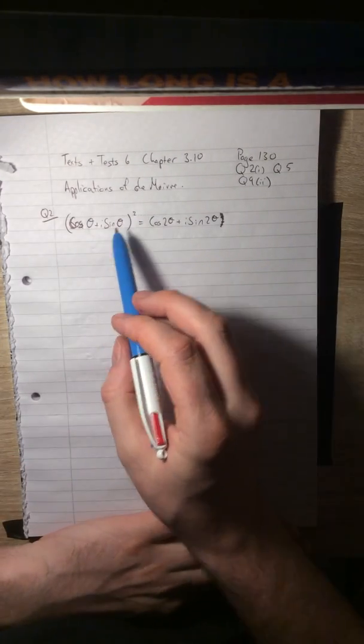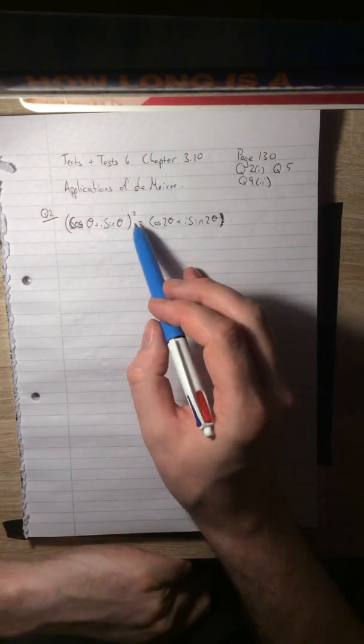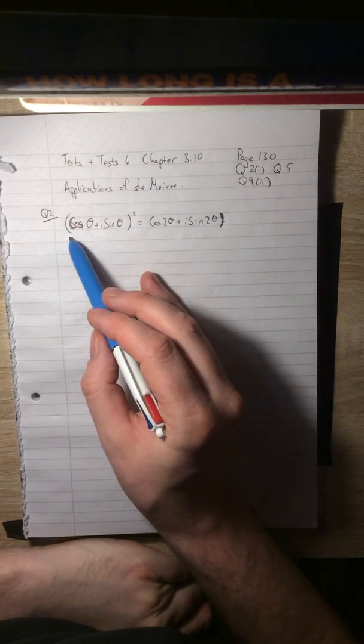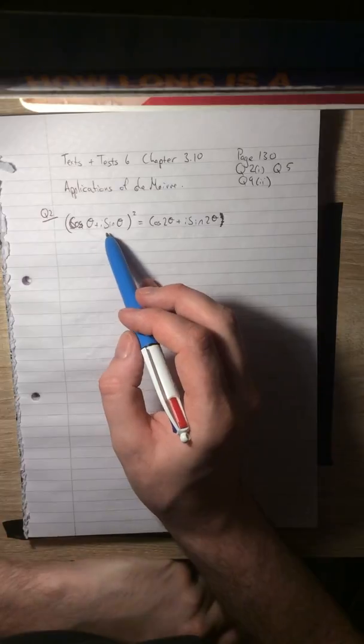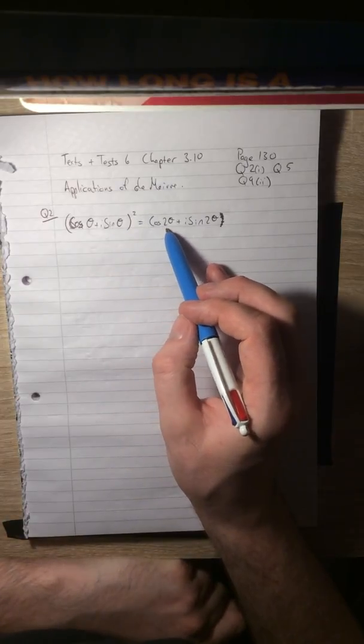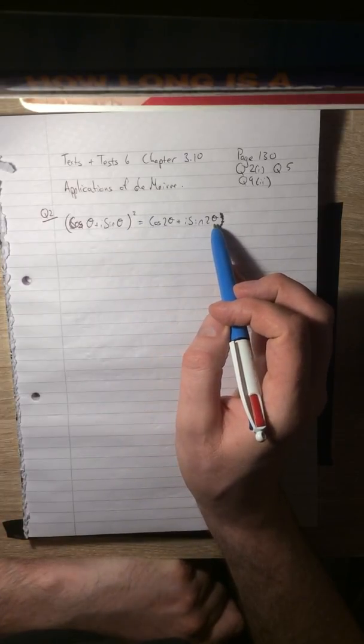So let's have a look at how you do that. To get sin 2θ using De Moivre, you'd say something like this: (cos θ + i sin θ)² is the same as cos 2θ + i sin 2θ. That's what De Moivre says.